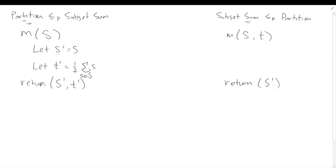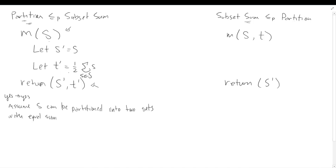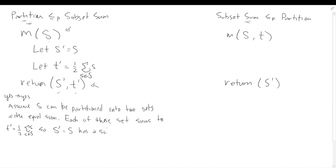What makes our reduction correct is that if we have a yes instance up here, we get a yes down here, and if we had a no, we get a no. So assume that S can be partitioned into two sets with equal sum — that is the definition of a yes instance. Then each of those sets sums to T prime, which is one half of the total. So S prime, which equals S, has a subset that sums to T prime. That's what we wanted to argue.